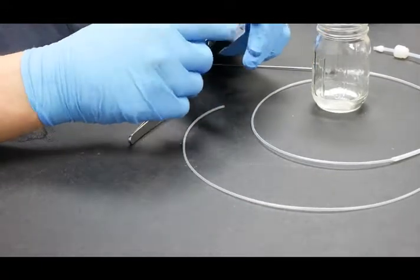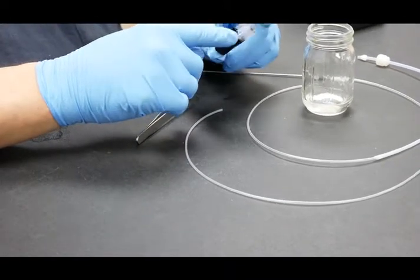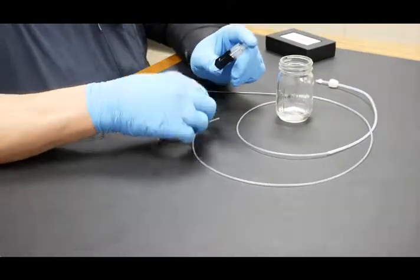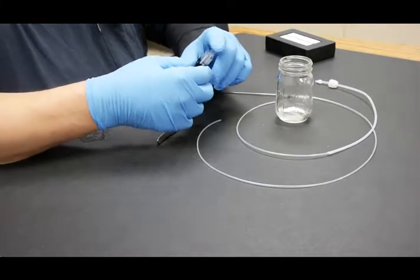Once we do that, we want to identify the stem tube that connects to the bottom of the flow cell. That's going to be the one that the probe tube attaches to, the long one.